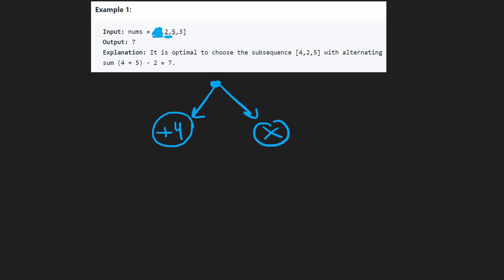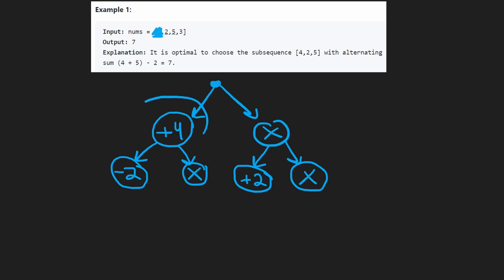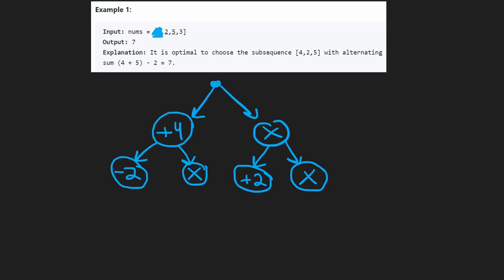Now we have sub-problems. In the path where we added four, the next value is two. We can choose to subtract two — because the previous value was added — or skip it. In the path where we skipped four, we haven't added anything yet, so when we reach two, we can add it or skip it. So the paths are: plus four minus two, just plus four, plus two, or nothing.